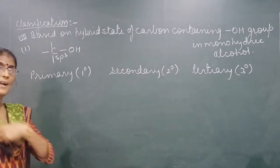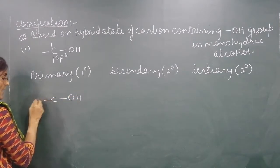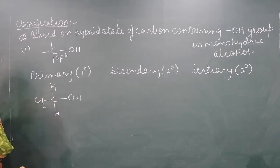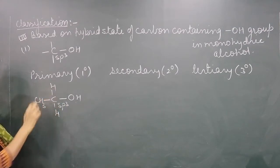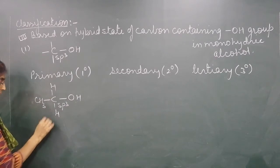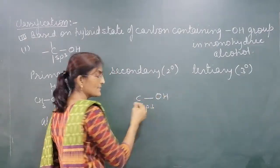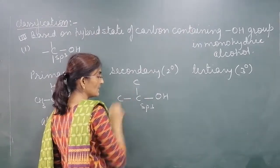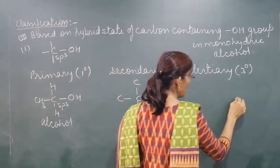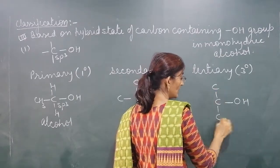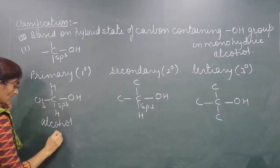What is Primary alcohol? If the OH-containing carbon, which is SP3 hybridized, is attached to only one more carbon atom, and the remaining two valencies are satisfied by hydrogen atoms, it is called Primary alcohol. What is Secondary alcohol? The OH-containing SP3 carbon is attached to two other carbon atoms, with one hydrogen. Tertiary means the OH-containing carbon is attached to three other carbon atoms.